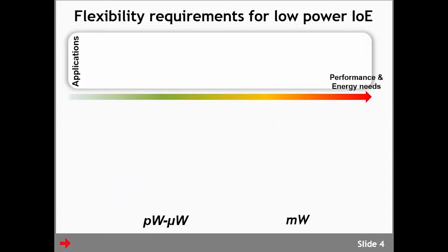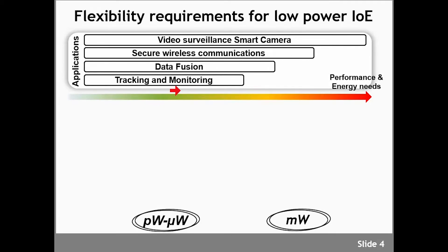Looking at Internet of Everything applications across the range of performance and energy needs, on the left side we have the picowatt and microwatt area and on the right side the milliwatt area. We have a non-exhaustive list of applications from tracking and monitoring up to video surveillance smart cameras. Between different applications we have very different performance and energy needs, but also within a single application like video, energy needs vary. For example, detecting that a door is opening requires little energy, whereas detecting a specific person in the room requires more energy in the milliwatt area.